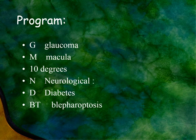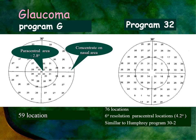In the Octopus perimeter, we have different programs: Program G for glaucoma, M for macular, 10 degrees, N for neurological, D for diabetes, and BT for blepharoptosis. The glaucoma program — Program 32 — is similar to that of the Humphrey, but most printouts for glaucoma in the Octopus are different. Program G has more points located in the central area; the distance between locations is 2.8 degrees, and it also concentrates on the nasal area. The total number of points tested is less, but they are concentrated in specific areas rather than regularly distributed as in the Humphrey.